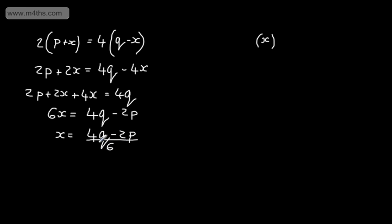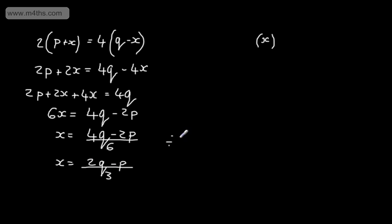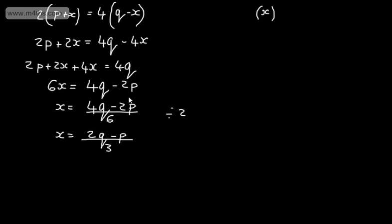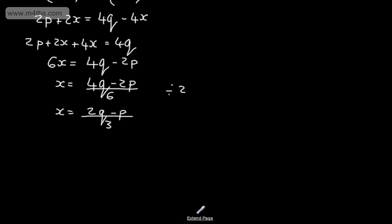At this stage we can divide through by 2 and write that x = (2q - p) / 3. All I've done is divided top and bottom of the fraction by 2. So that's a nice straightforward example of making x the subject.